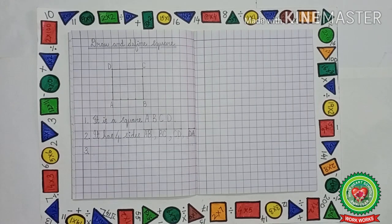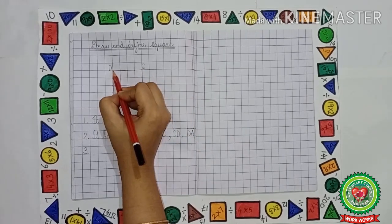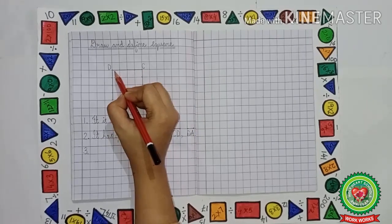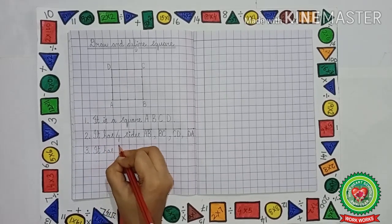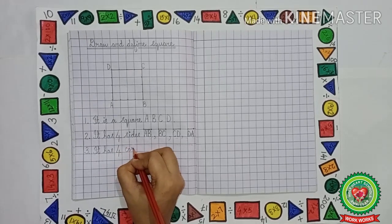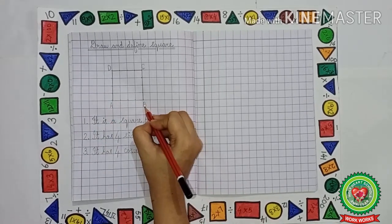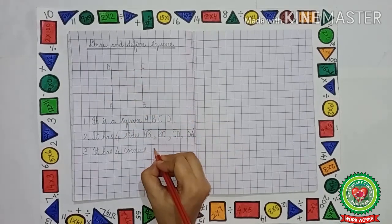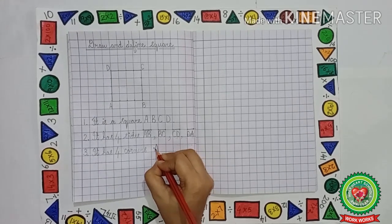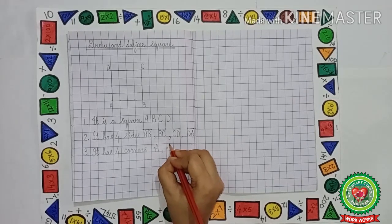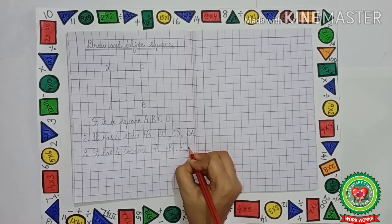Now, how many corners does it have? These are the corners of a square — one, two, three, four corners. So we will write: it has four corners. The names of the corners are dot A, dot B, dot C and dot D.